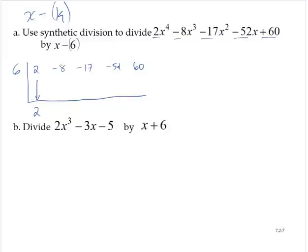I'm going to take the 2 and multiply it by 6. So 2 times 6 is 12. Now I add in the column, negative 8 plus 12 is 4.